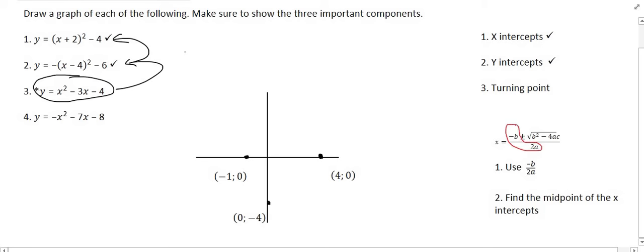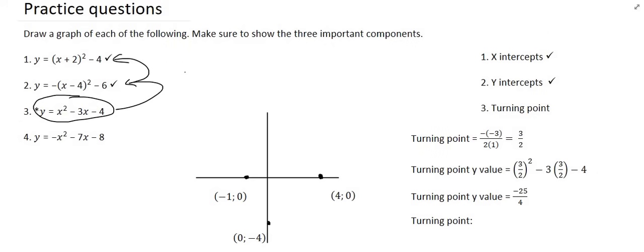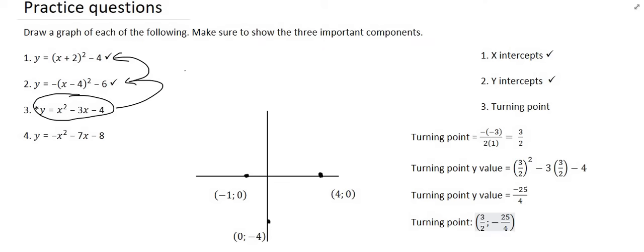Using the values of a, b, and c from the original equation, we apply minus b over 2a and get the turning point x value of 3 over 2. Remember this is only the x value — to find the y value substitute that x back into the original equation. The final turning point coordinates can then be located on the diagram. It helps to convert to decimals: 3/2 is approximately 1.5, and minus 25 over 4 is approximately negative 6.25.